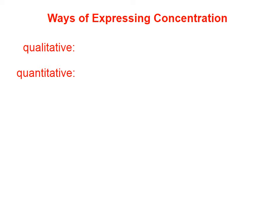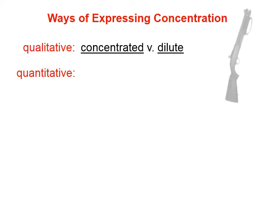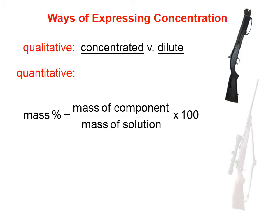We can express concentration qualitatively or quantitatively. When we talk about concentration in a qualitative sense, we just point to a solution and say that's concentrated relative to this other one, or it's dilute relative to this other one. There isn't a lot of precision there because we don't have any numbers that give us information about the concentration. However, there are lots of quantitative measures of concentration.